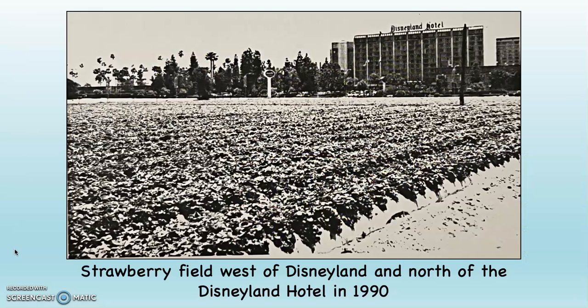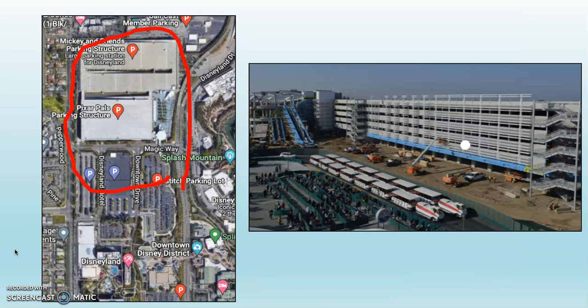There's the Disneyland Hotel in the background, and you can see a strawberry farm in the foreground. This photo is from 1990 — taken for a master's thesis. It was one of the last strawberry farms in Orange County. Once Disney acquired it, that land became a parking lot and parking structure, which you can see circled on the left-hand side in red.